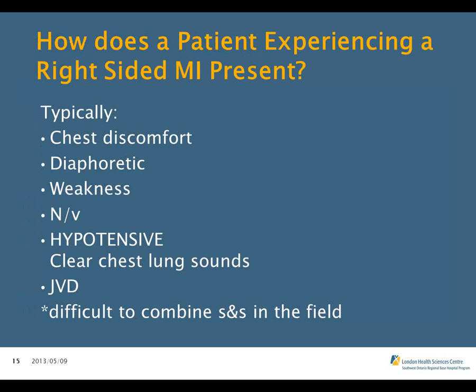How does this patient present? Typically they have chest discomfort or pressure, may be diaphoretic, weak, with nausea, vomiting, and are hypotensive. They typically have clear lung sounds and JVD. These signs and symptoms are difficult to combine in the field, and the right-sided 12-lead is not performed by paramedics in the field to confirm the right ventricular infarct.